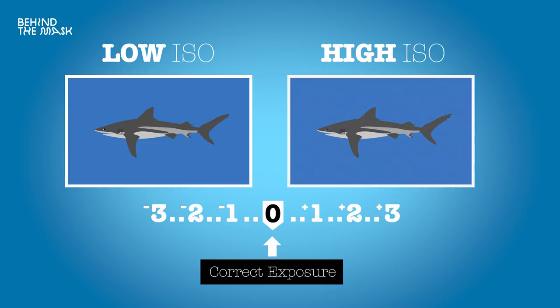A higher ISO value means your camera sensor is going to be more sensitive to light, so your image will be brighter and you bring your exposure up. This is great because it allows you to shoot in low light conditions, but it's going to introduce more noise and more grain to your image. When someone says a camera is great for low light, it means you can use a really high ISO without introducing too much noise.